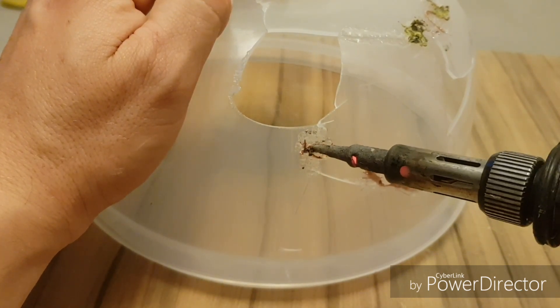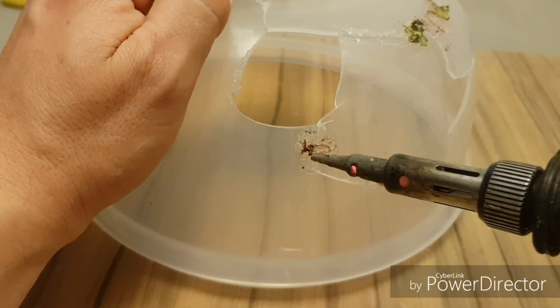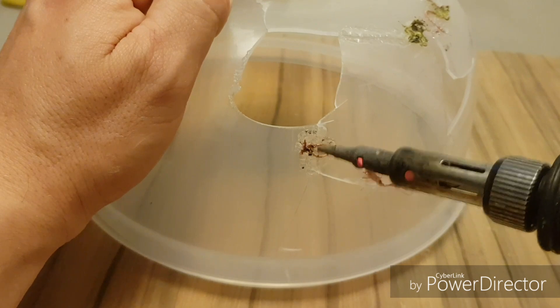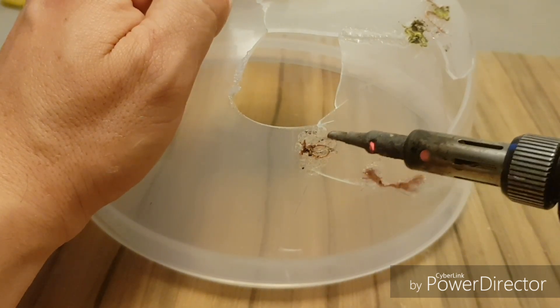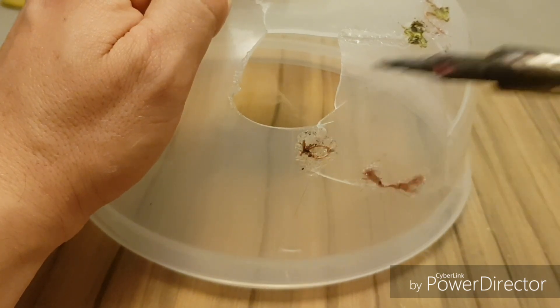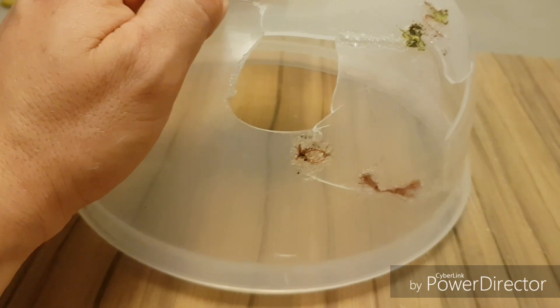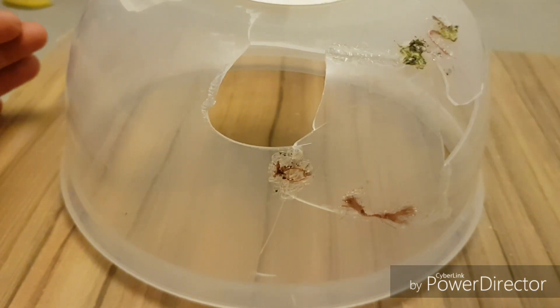Plastic welding can be done by anybody. Find an old item that's got some cracks in it or broken, you're not too worried about, and then just sit and try some of these ideas out. Okay, so I'm just going to turn the soldering iron off there.